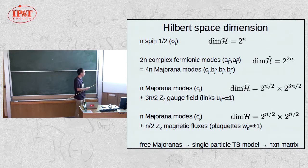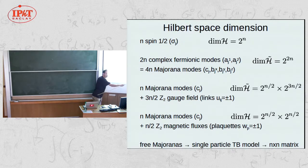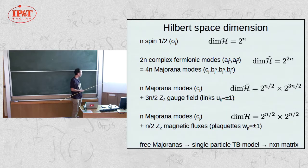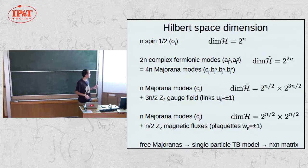The great simplification is that once you have a quadratic Hamiltonian in Majoranas, instead of solving an exponentially large many-body problem, you solve a single-particle tight-binding problem — an N×N matrix. This reduces the problem from an exponentially large Hilbert space to one linear in the number of sites.